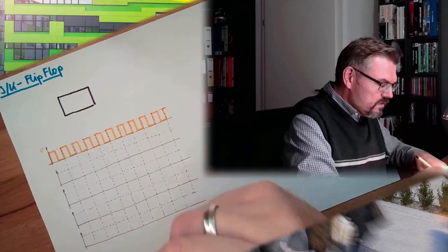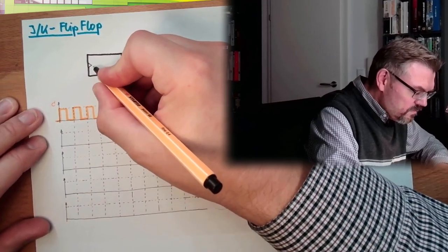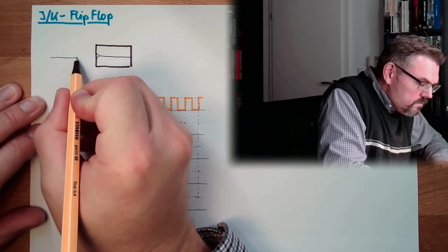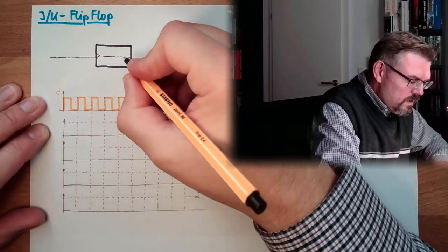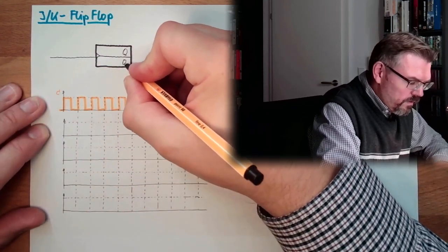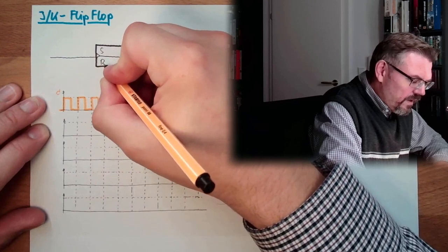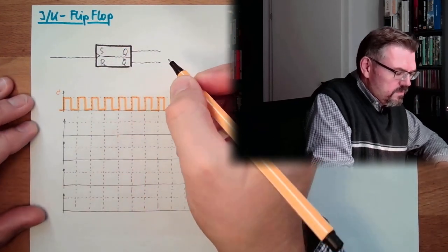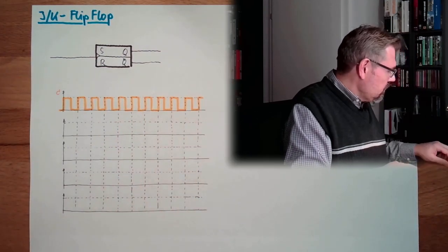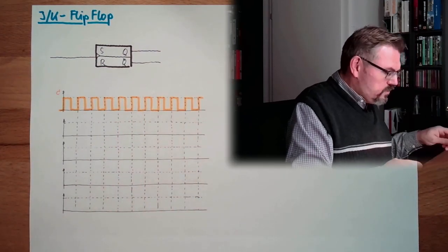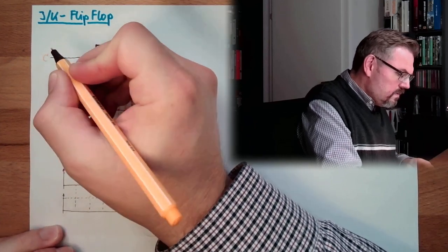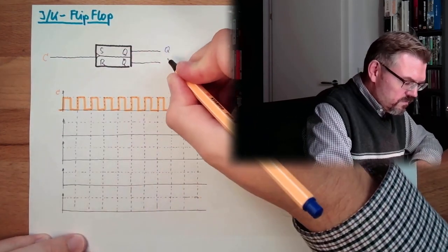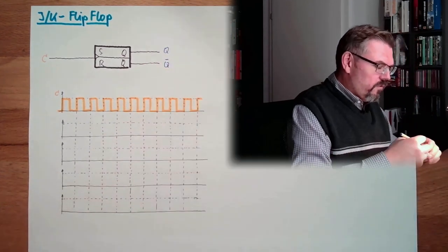We have, of course, the C input. We have Q and not Q. We have an S and an R line, and we have the Q and not Q outputs. So this actually is the C input.